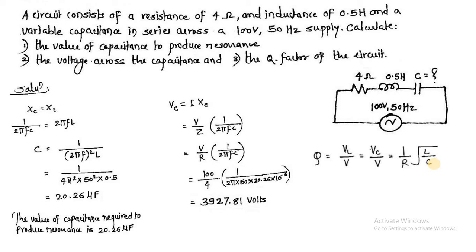As I know VC, as I know V, I can take the ratio Q is equal to VC upon V. VC value is 3927.8 divided by V value is 100. So the quality factor is coming 39.278. It is unitless value because it is a ratio of 2 voltages. Volt-volt is going to cancel. So quality factor is always unitless value. Q is equal to 39.278.